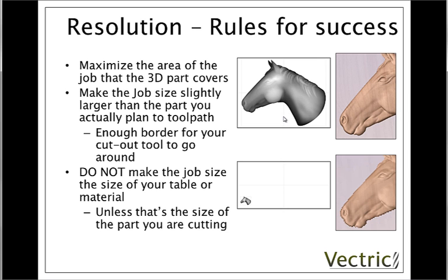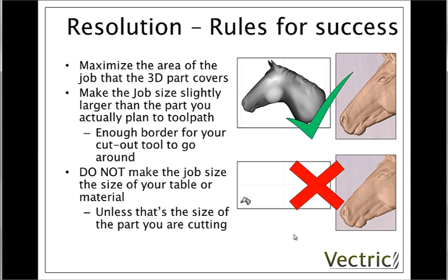In the example shown on the slide here, you can see the same horse's head in two different job setups. In the top example, the horse which is about 10 inches across is in a job setup which is about 12 inches across, leaving a small gap around the outside. On the right you can see the quality of that 3D model. At the bottom, the same resolution is set but the job is a 4x8 sheet of material, so the 10-inch horse head covers far fewer pixels and, as you can see on the right, the pixelation and quality is much worse.